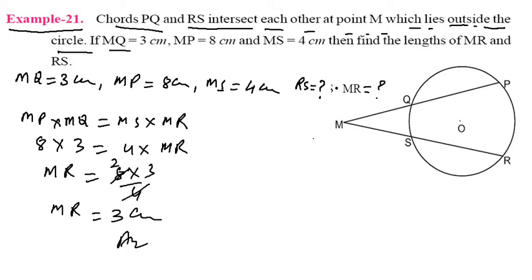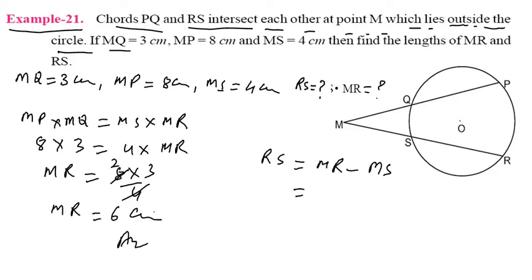Now we want to find RS. RS equals MR minus MS. MR is 6 centimeters and MS is 4 centimeters. So RS equals 6 minus 4 equals 2 centimeters. That is your answer.